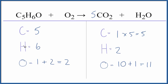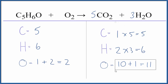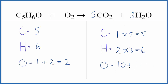Let's fix the hydrogens. We could put a three in front of the water, so we have two times three — that gives us six hydrogen atoms. We've got to update our oxygens though: two times five is ten, plus one times three equals thirteen.